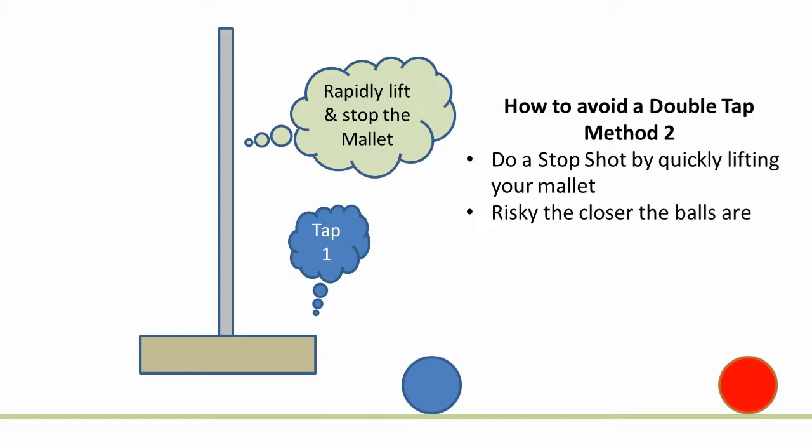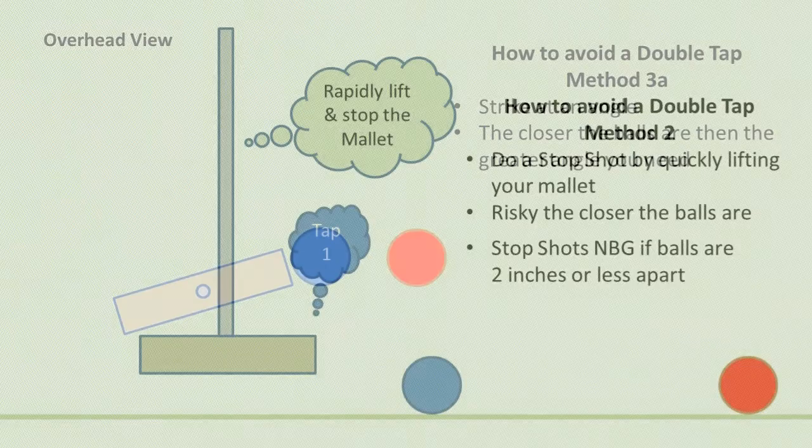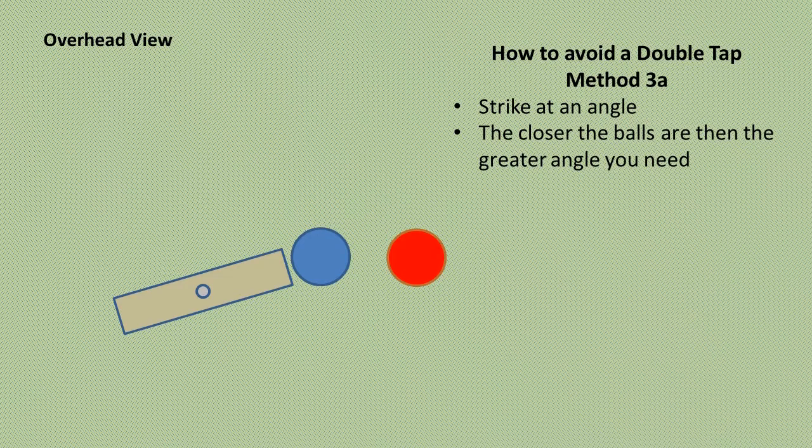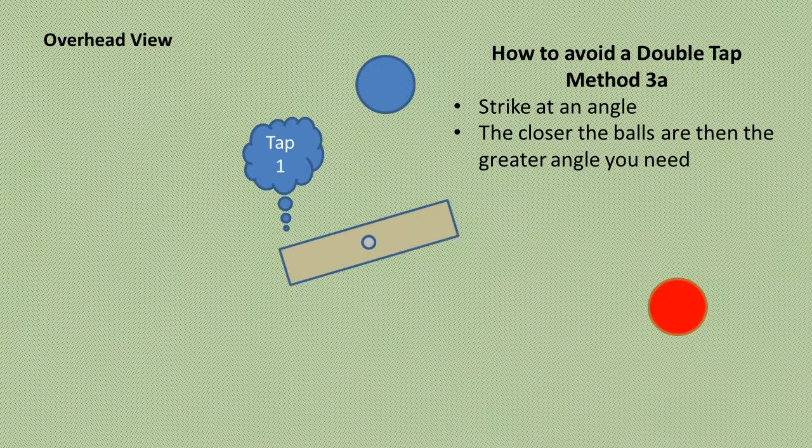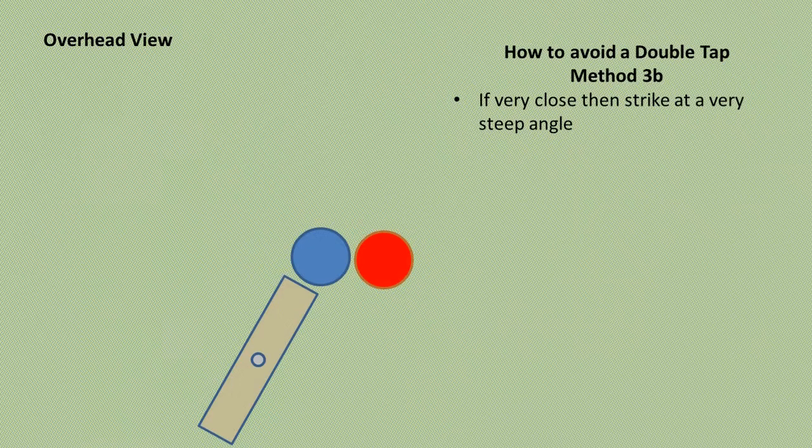Looking down on the mallet and balls, this animation shows the effect of striking at an angle to avoid a double tap. The closer the two balls are, then the more acute the angle needs to be.